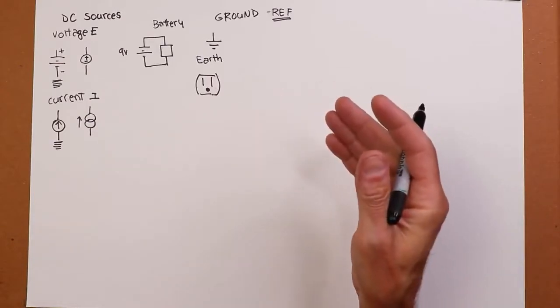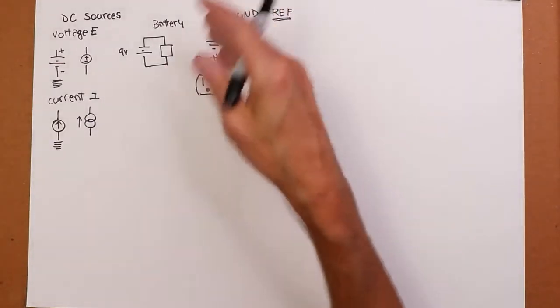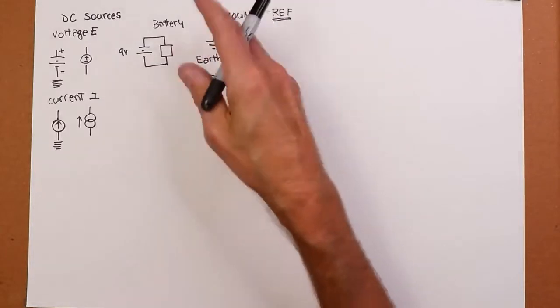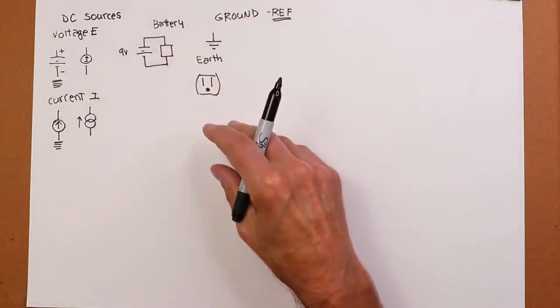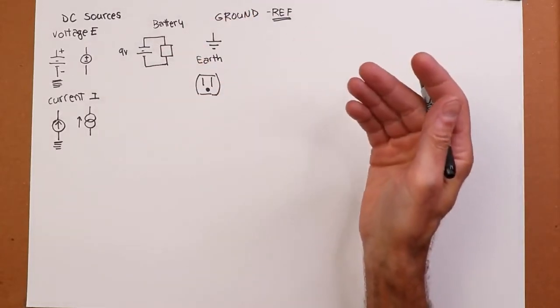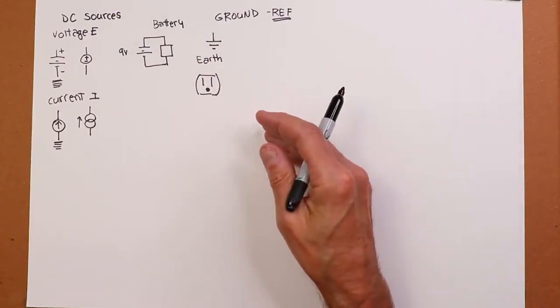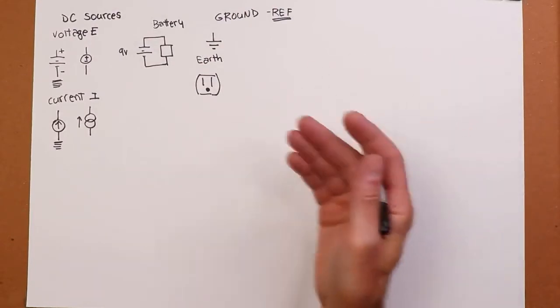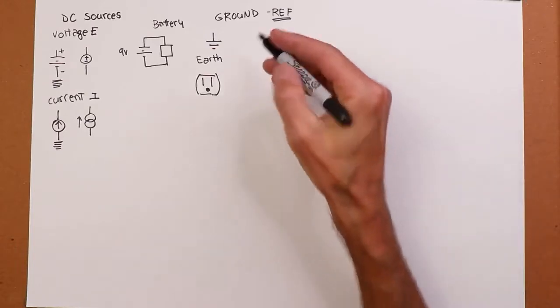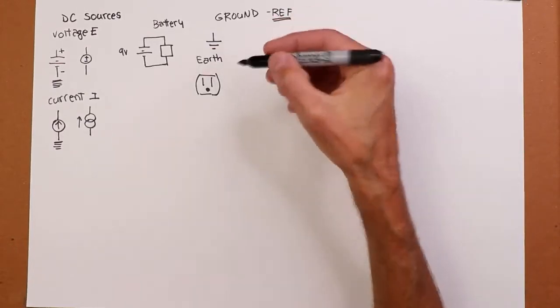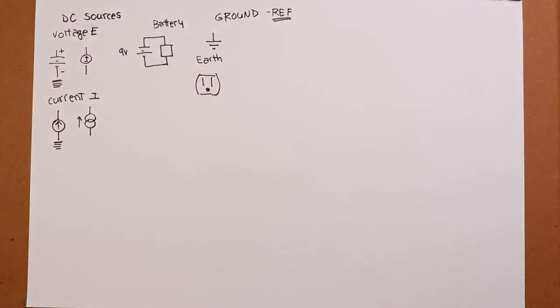Well, not everything needs to be connected to earth. There are safety reasons why we have that in your home electrical distribution system. But not everything needs to be connected to earth. That's impractical in many cases. If your cell phone was connected to the earth, it's not going to be very portable.